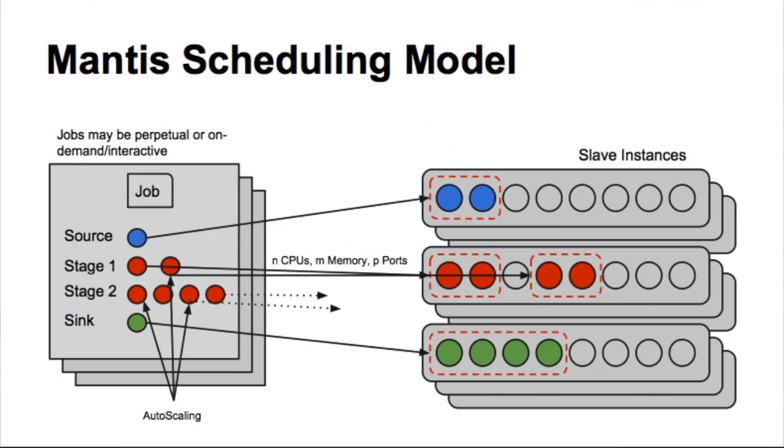So we started building Mantis scheduler for that. In Mantis, the way it looks is that you've got a job, and a job connects to a data stream source, and it has one or more computation stages, and each stage can have one or more worker, and each worker is a Mesos task. So when I schedule a job, what it means is that I'm scheduling multiple workers or multiple tasks, and each task requires some amount of CPU memory, number of ports, et cetera. And then they all eventually funnel into an output called a sync.